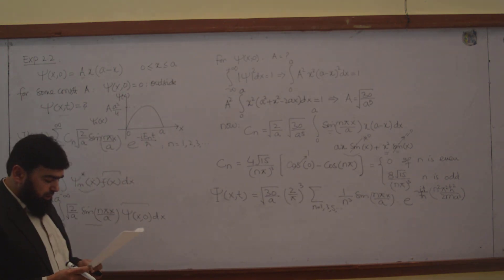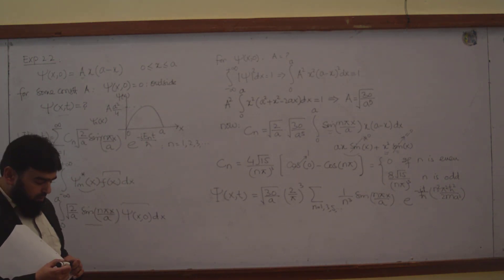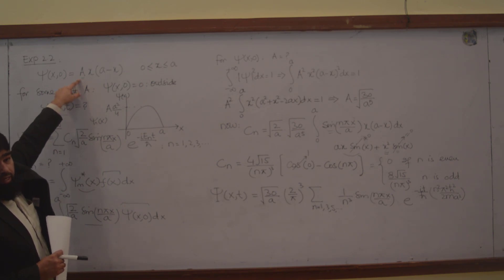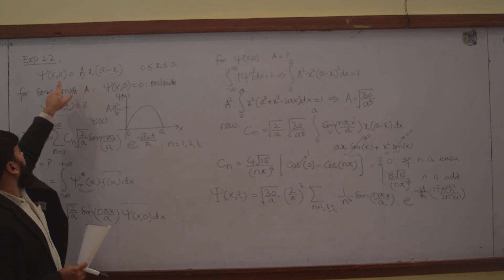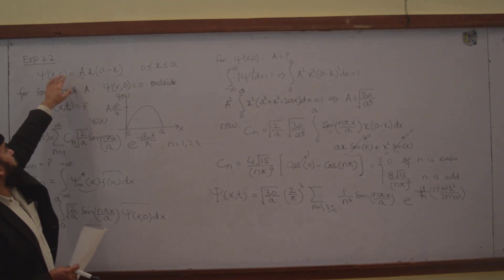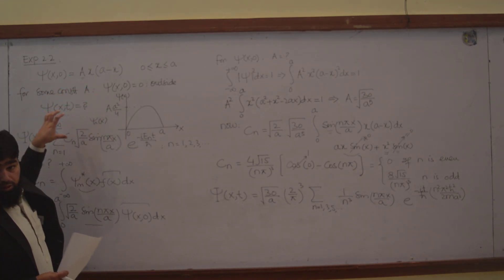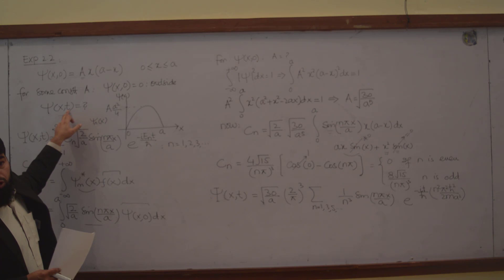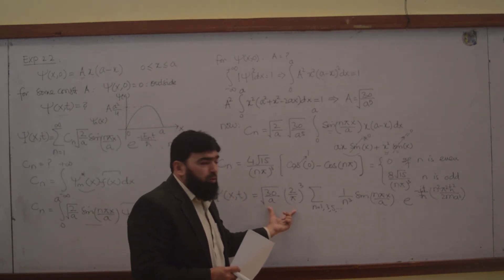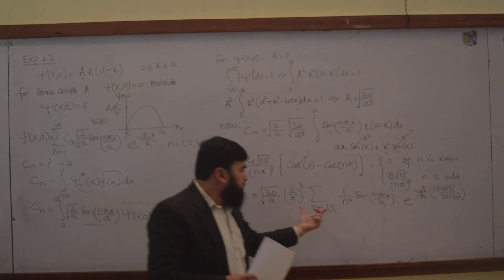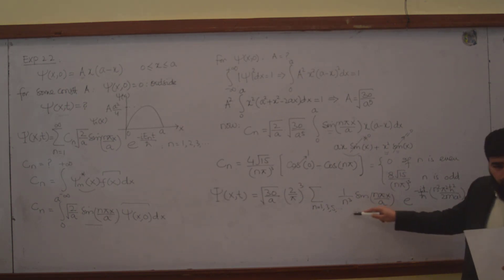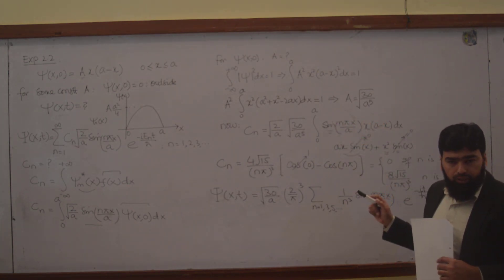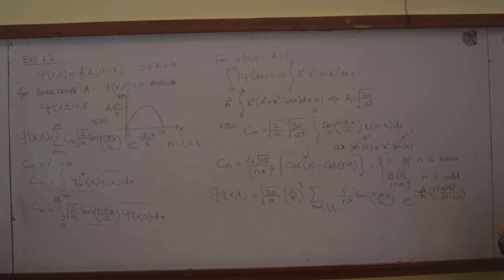This will come out to be the wave function. The wave started in a certain form — this is the state of a particle at time t equal to 0. You put this particle into an infinite square well and you want to see what happens to the state of the particle after time t. After time t, the particle's state will become like this. You see that the infinite square well is playing its role, and you calculated Cn in terms of the infinite square well.